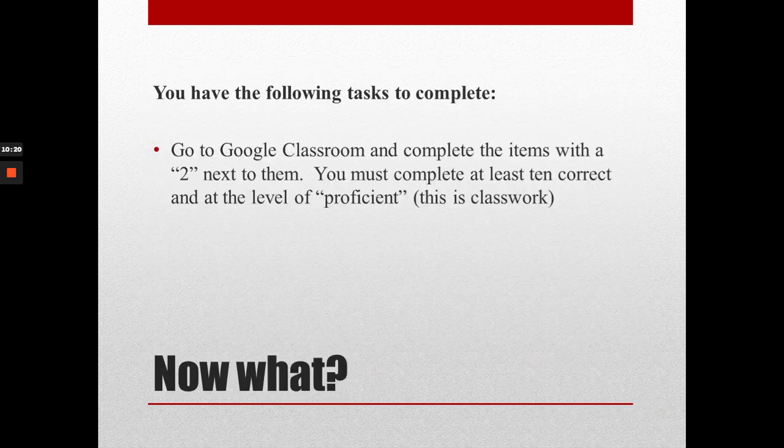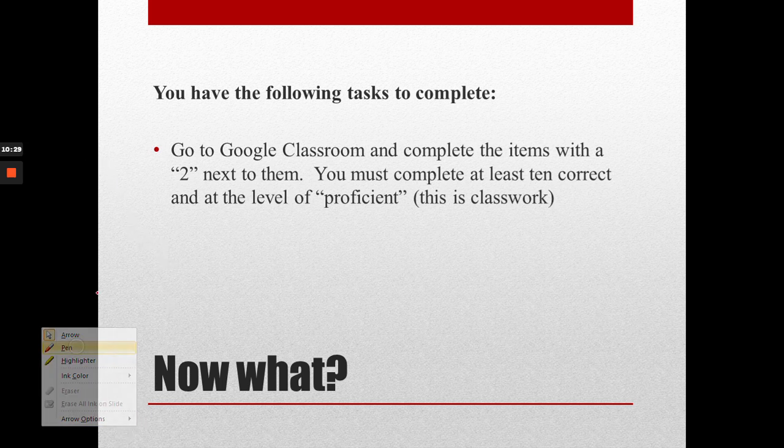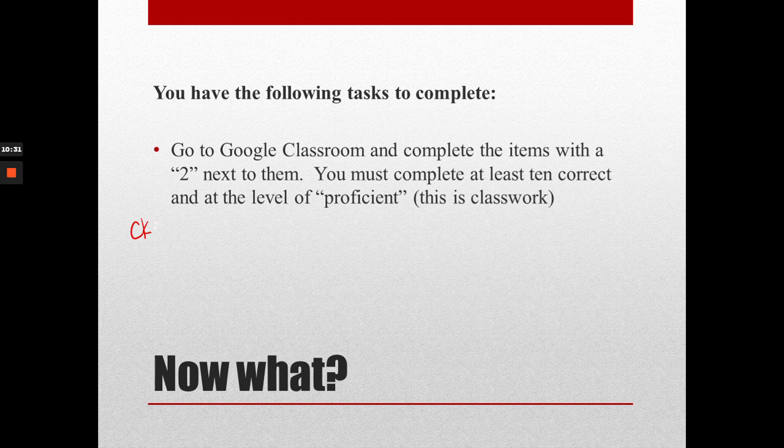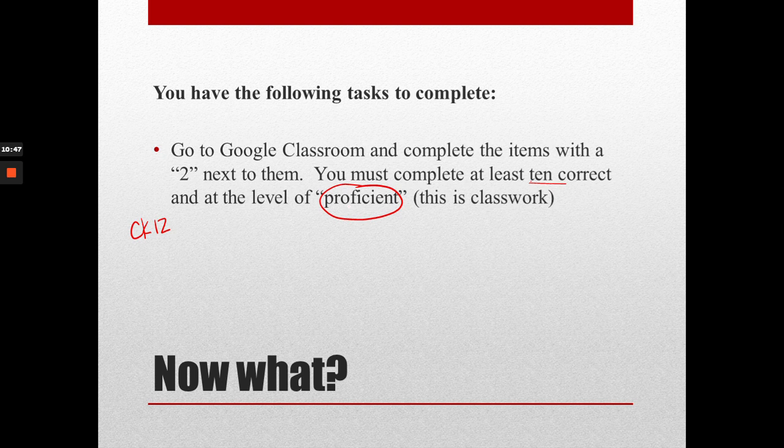So what you will need to do now is go to Google Classroom and you will complete the items from CK12 that have the number two next to them. And remember that you are aiming for 10 correct and a measure of proficient. If you get 10 correct but you are not proficient, you need to continue to try to practice and get up to that proficient level or ask me to reset it for you if you just can't get there. So number two.